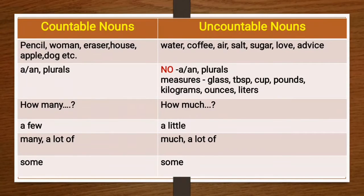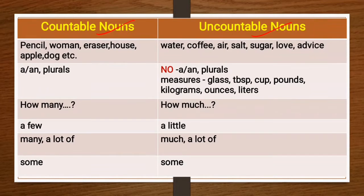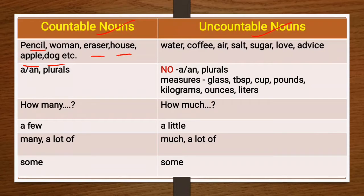Countable and uncountable nouns: as the name suggests, the nouns which we can count are called countable nouns, and the nouns which we cannot count come under the category of uncountable nouns. For example, women, pencil, eraser, house, apple, and dog are examples of countable nouns. Now let's talk about the rules of using countable and uncountable nouns.